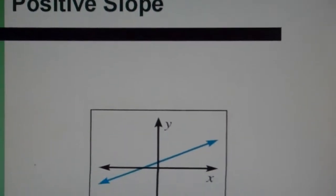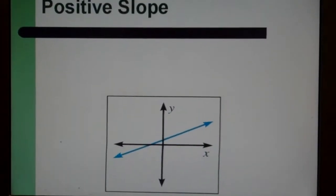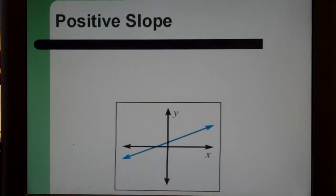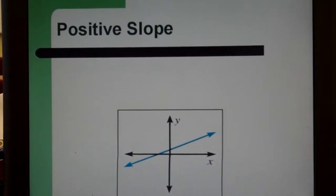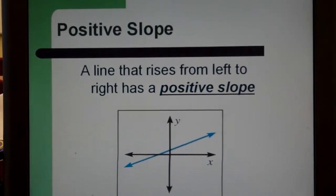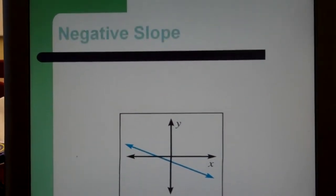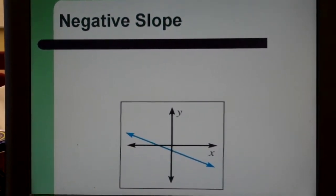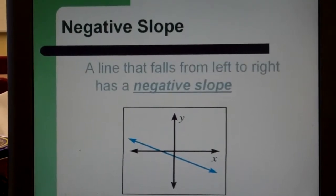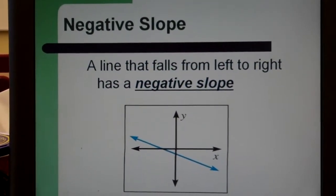Positive slope. The line looks like this. Again, that's when the line rises from left to right. Negative slope looks like this, which is when it falls from left to right.